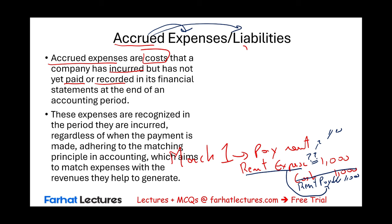These expenses are recognized in the period they are incurred regardless of when the payment is made. For my March expense, I may not pay it till June or April or some other time. Nevertheless, the expense was recorded in March. This adheres to the matching principle — I record my expense in March for the month of March, when it incurred and helped me generate revenues.